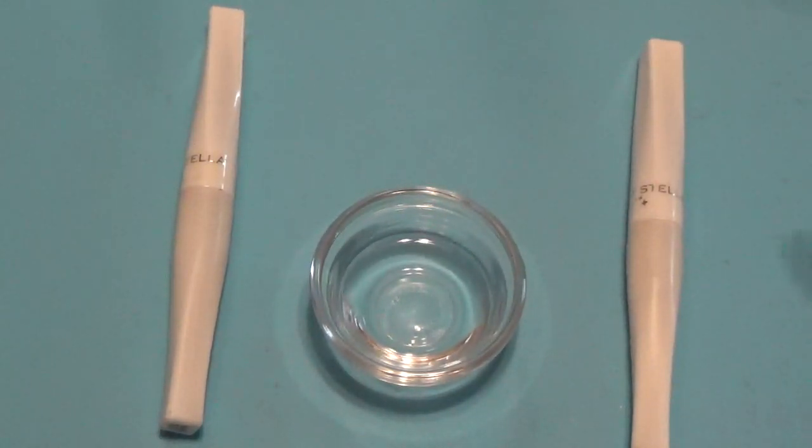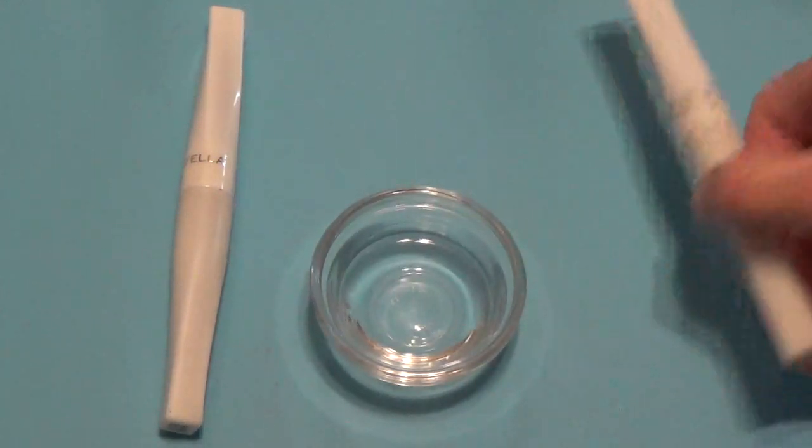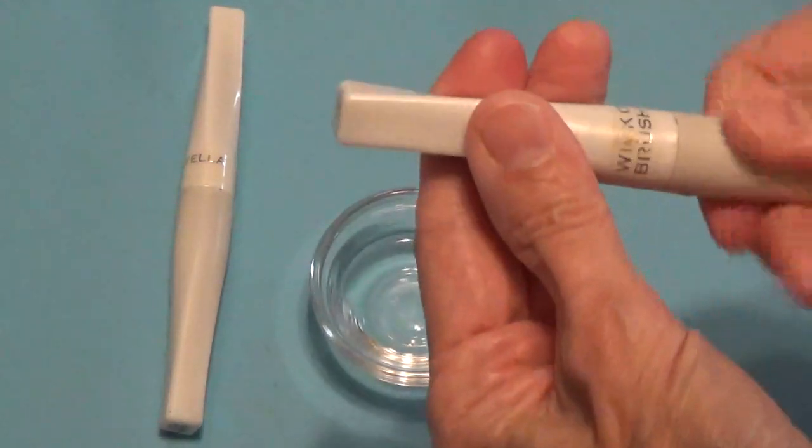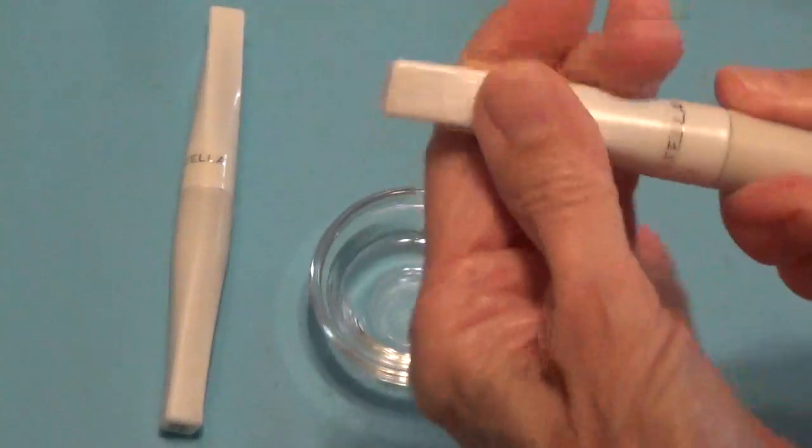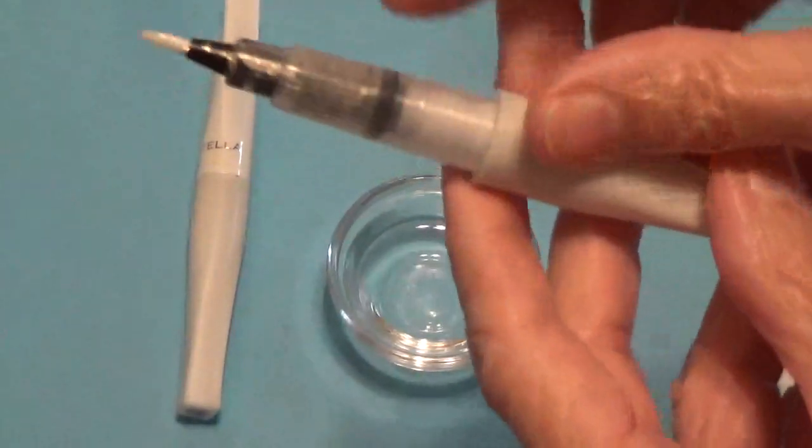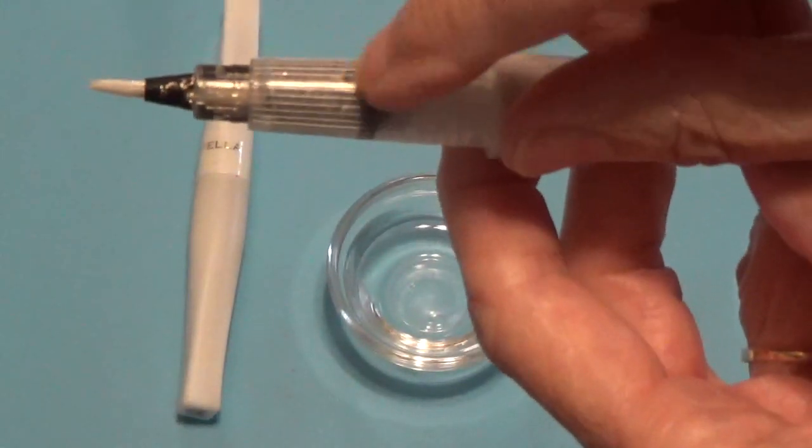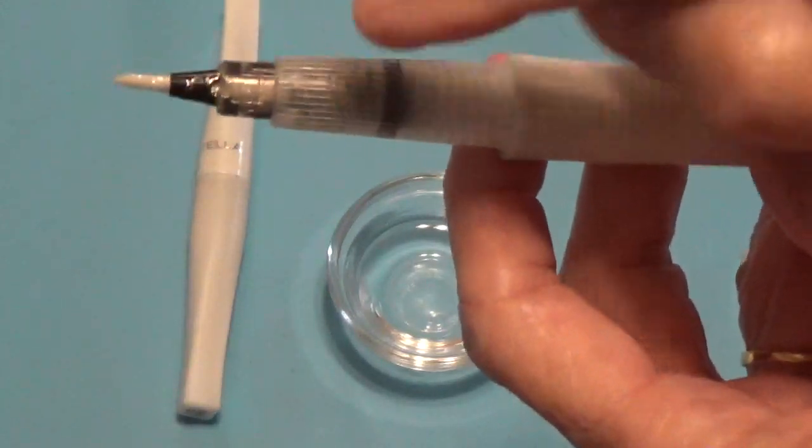So I want to show you what you can do to get the most out of these Wink-O-Stella containers. When you take them apart, you look in here—look at all that sparkle that is still in here, and I want to use every bit of this.